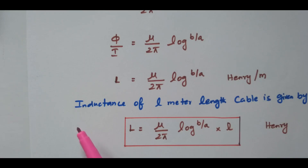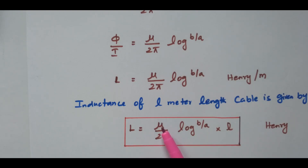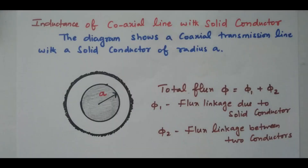If you want to find the inductance for an entire length L of cable, it is given by L = μ/(2π) · log(B/A) × L, where you multiply by the length of the cable. In this case the unit will be Henry. In this video we discussed the definition of inductance and derivation of the inductance of a coaxial underground cable having two conductors.